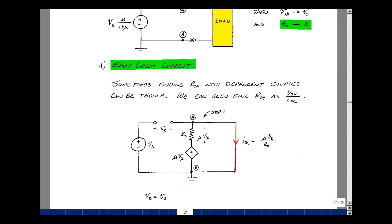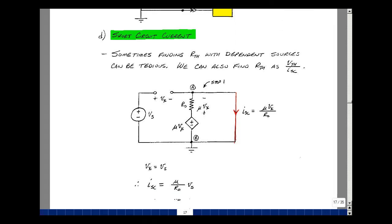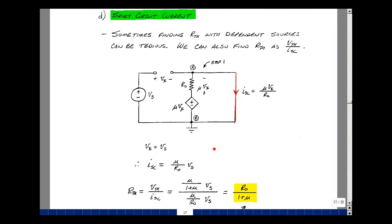When we're talking about finding the Thevenin resistance, we also found that there was another way of finding this by taking the ratio of the Thevenin voltage to the short circuit current. Let's find the short circuit current. So I'm going to take over here on my terminals A and B and short them. And I'm going to find the current in the short circuit.